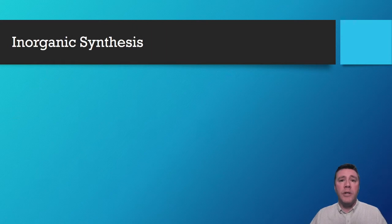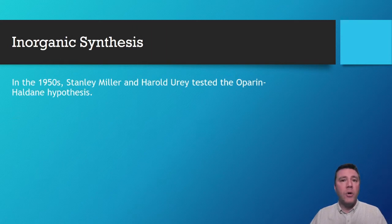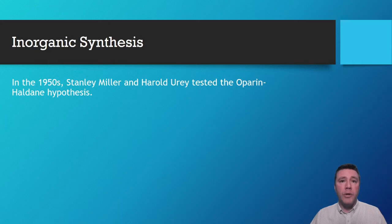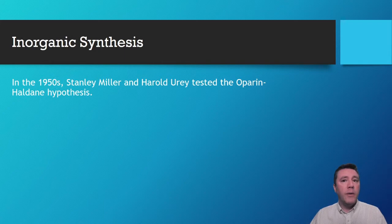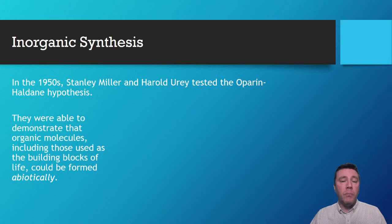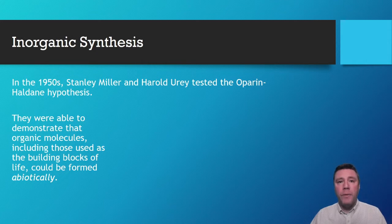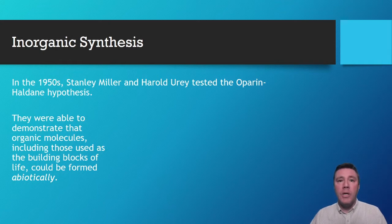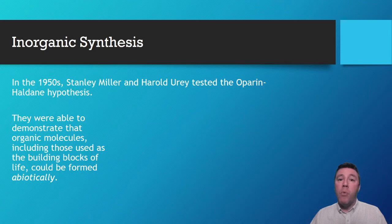It wasn't until nearly 20 years later, in the 1950s, when Stanley Miller and Harold Urey put the Oparin-Haldane hypothesis to the test. They were able to show that organic molecules, including ones that are used to build biomolecules like proteins and nucleic acids, could be formed abiotically, without life. Long after the original Miller-Urey experiments of nearly 70 years ago, extensions of their work in laboratories around the world have provided even more validity of Oparin and Haldane's original idea.